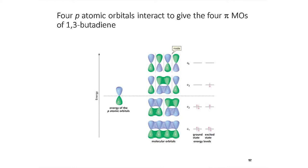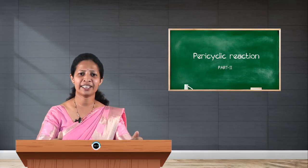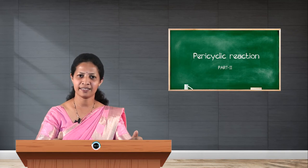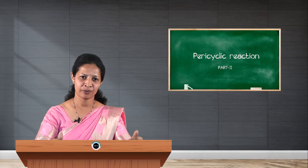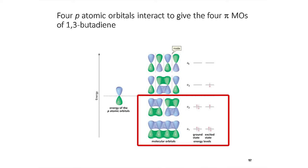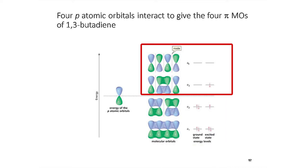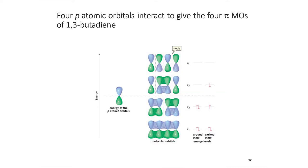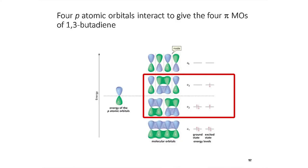These four molecular orbitals are arranged in increasing order of energy. In the ground state of 1,3-butadiene, all four pi electrons are occupied in psi 1 and psi 2. Therefore psi 1 and psi 2 are occupied molecular orbitals, while psi 3 and psi 4 are unoccupied. Psi 2 is the HOMO (highest occupied molecular orbital) and psi 3 is the LUMO (lowest unoccupied molecular orbital). The combination of psi 2 and psi 3 are the ground state frontier molecular orbitals of 1,3-butadiene.